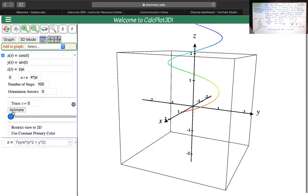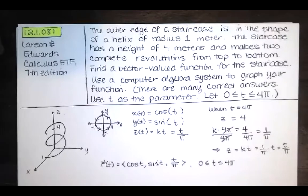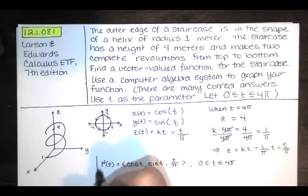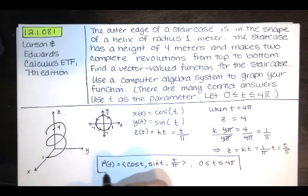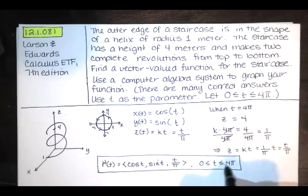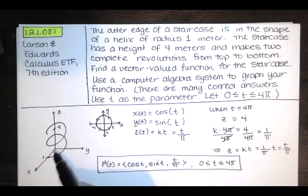And we can sort of trace it out, which is pretty. So that is the vector valued function given the interval that they gave us and the fact that the helical staircase had a height of 4 meters and a radius of 1 meter.